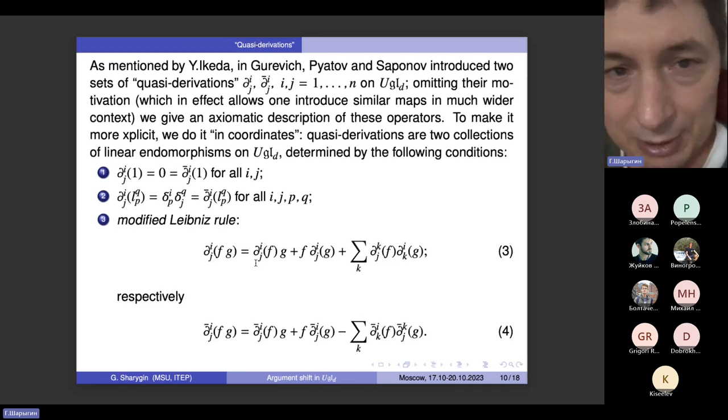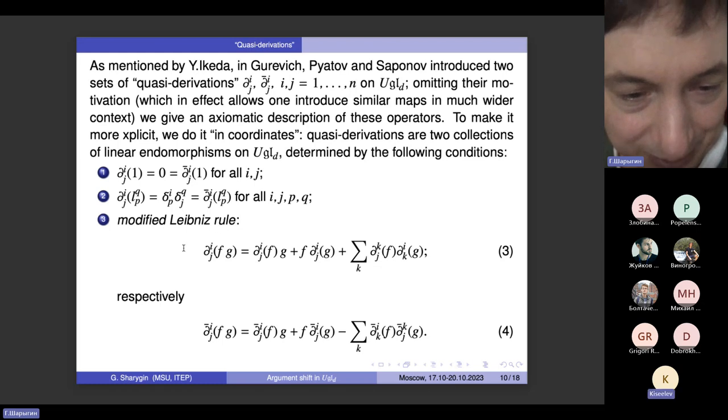So I'm going to describe a way to raise the operator psi to an operator on universal enveloping algebra of GLD. And to this end, I need to describe what I will do to replace the partial derivatives. Here is a suggestion, a way to change them to something which will act on universal enveloping algebra. These operators are called quasi-derivations. They exist, and it's their main property. But also their property, which is also very important, is this modified Leibniz rule.